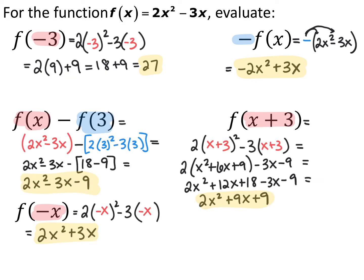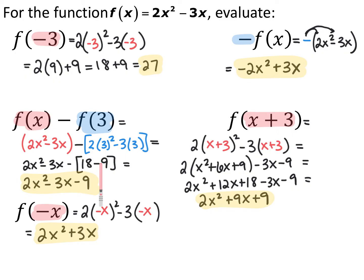For f of x minus f of 3: f of x just means the very original function, so it's 2x squared minus 3x. For f of 3, I replace every x with 3, getting 2 times 3 squared minus 3 times 3, which simplifies to 9. Subtracting gives 2x squared minus 3x minus 9.